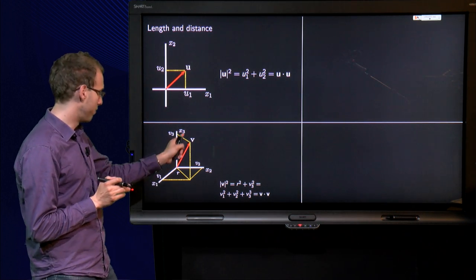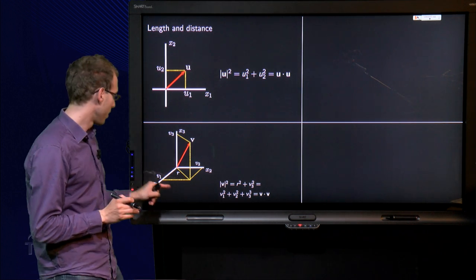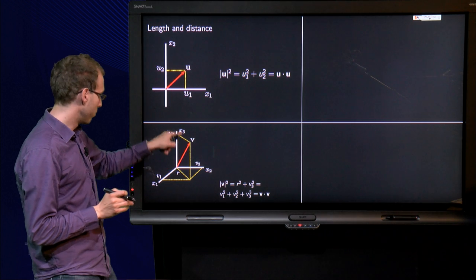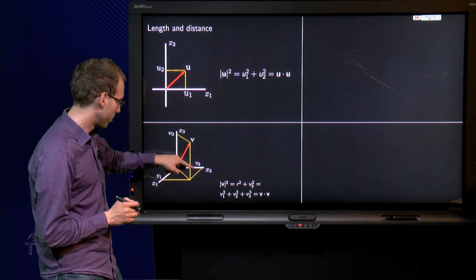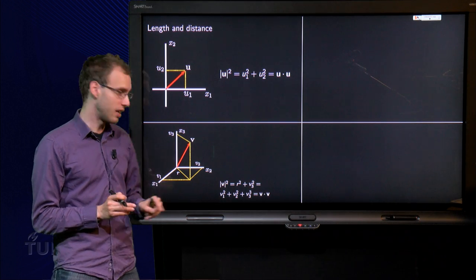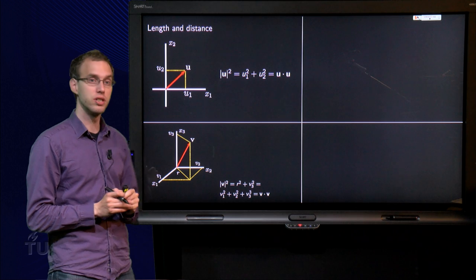We have our vector v. We will call this distance r, and here we have the components v1, v2, v3. So this length over here equals v1, the yellow line over here. This length over here equals v2, the yellow line, and the height equals v3.